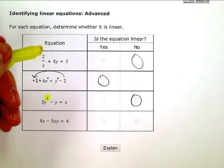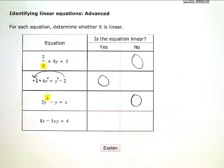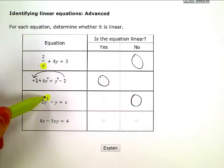This was the problem in the first one. So this one had a variable in the denominator. This one has an exponent other than 1 on a variable.